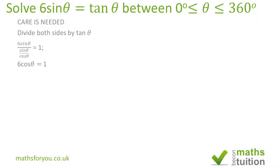That gives us cosθ as one over six, which is positive. This suggests our values will be in the first and fourth quadrants.